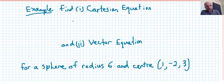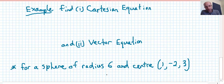Two examples to finish off now. In this example, we've got a sphere with a radius of 6 and the center at 1, negative 2, 3, where you find the Cartesian equation, firstly, and then find the vector equation. For the Cartesian equation, we need to identify h, k, and l, and that's pretty easy to do. We've got h equals 1, k equals negative 2, and l equals 3.